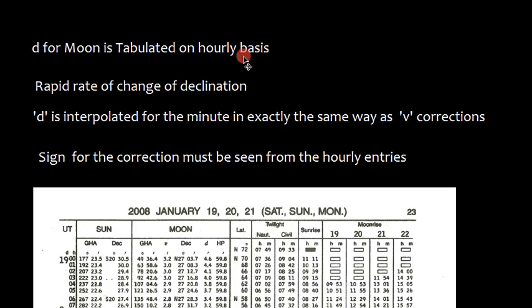D for the Moon is tabulated on hourly basis. This makes sense because there is a rapid change of declination. The position of the Moon in the sky keeps changing very rapidly. D is interpolated for the minutes in exactly the same way as V correction. Sign for the V correction must be seen from the hourly entries. So we have to see here. This is 19.00. Declination is 27 degrees 3.7 minutes and D is 4.6.